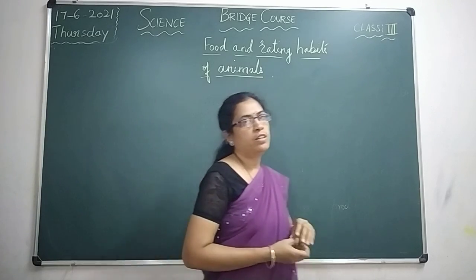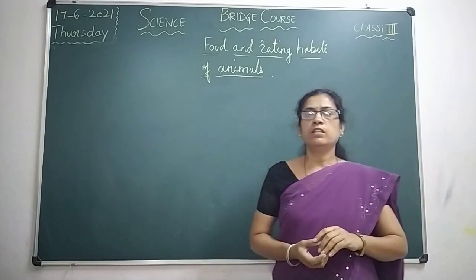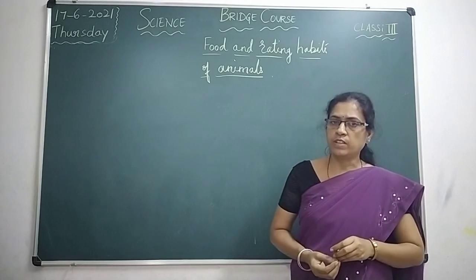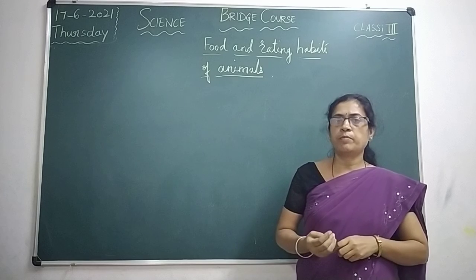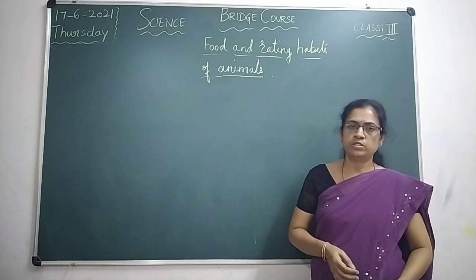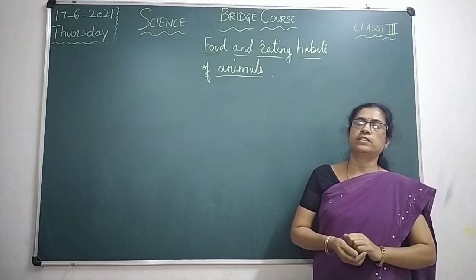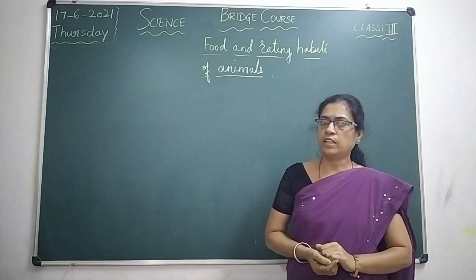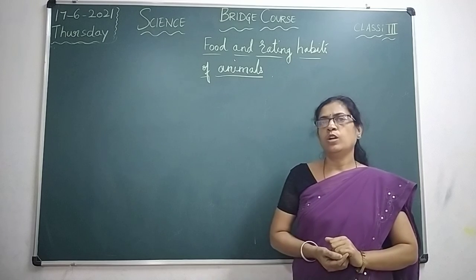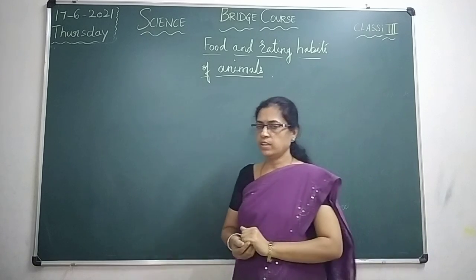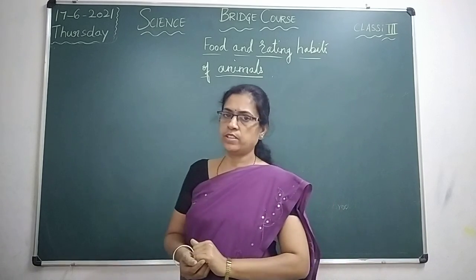So children, depending on the eating habits of animals, they can be classified into three groups: that is herbivores, carnivores, and omnivores. So let us learn about that, children.